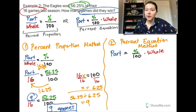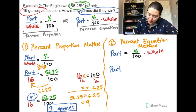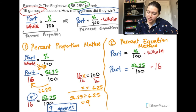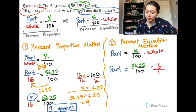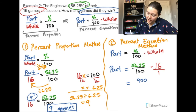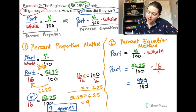Now using the percent equation, which is easier — especially with a calculator. We're finding the part: 56.25 over 100 times 16. We multiply 56.25 times 16 to get 900, then divide by 100. Canceling the zeros gives us 9, or nine games. This is a bit faster because we don't need to find the scale factor of 6.25.